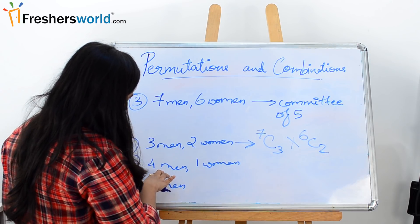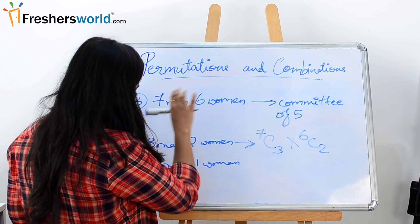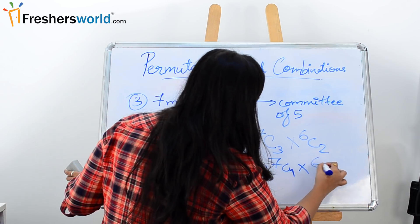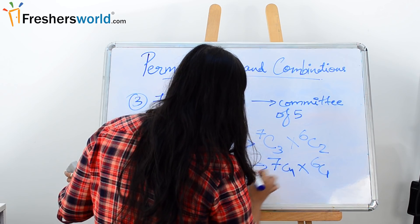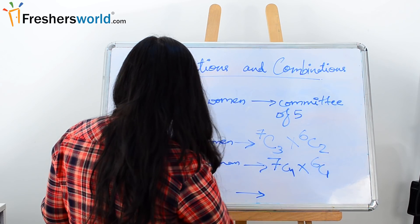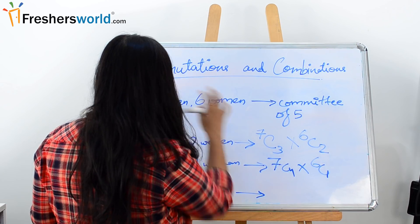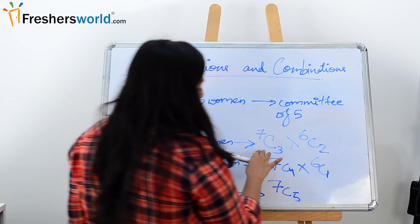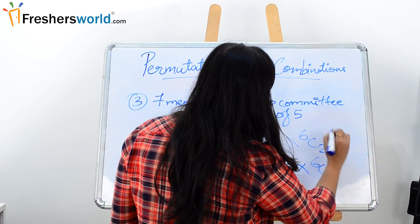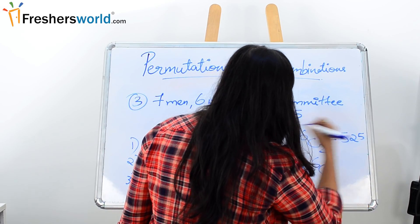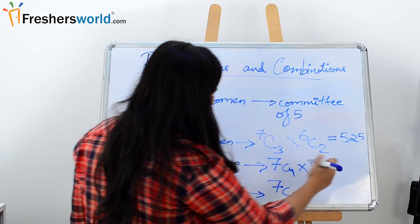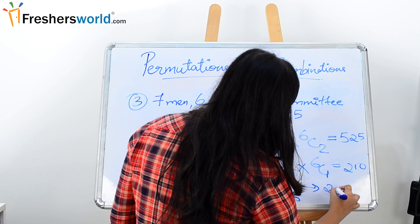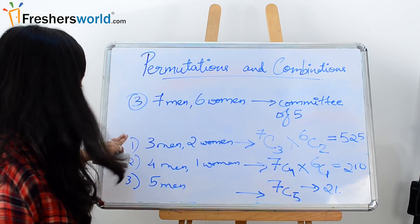Now the next case: 4 men out of 7 men, so it would be again 7C4 into 6C1. And the third case is 5 men out of 7 men, that would simply be 7C5. Now this, if we calculate, we will end up getting 525. And this, if we calculate, we will end up getting 210. And 7C5 is 21.